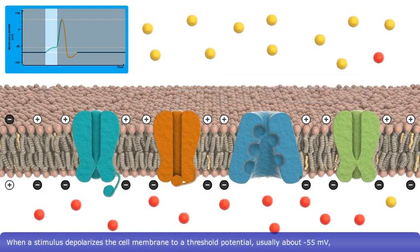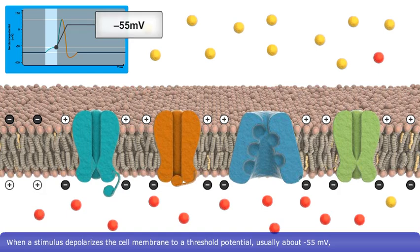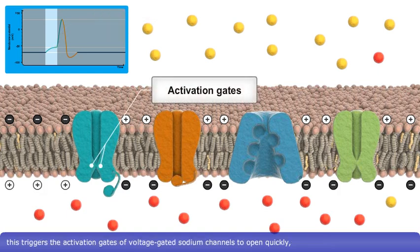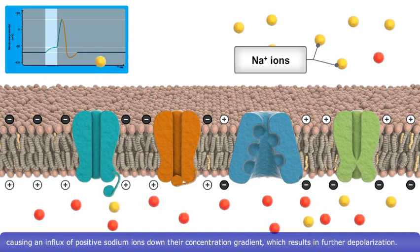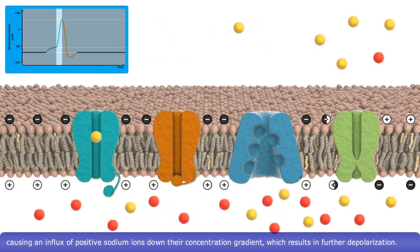When a stimulus depolarizes the cell membrane to a threshold potential, usually about minus 55 millivolts, this triggers the activation gates of voltage-gated sodium channels to open quickly, causing an influx of positive sodium ions down their concentration gradient, which results in further depolarization.